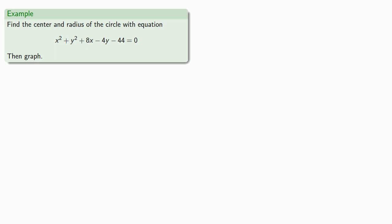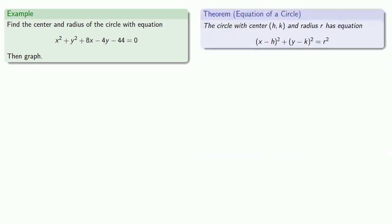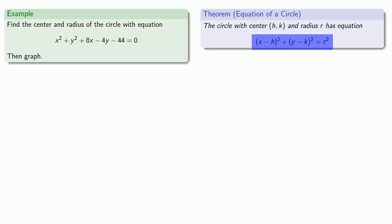The easiest standard form to work with is the following: the circle with center (h, k) and radius r has the equation (x minus h) squared plus (y minus k) squared equals r squared. Notice that all x terms are part of a perfect square, and all y terms are part of a perfect square. So to find the equation of a circle in this form, we'll want to complete the square on both x and y.